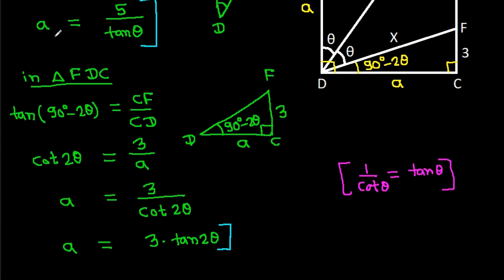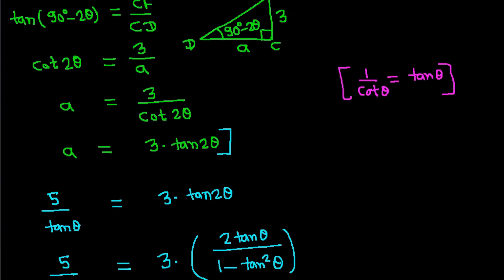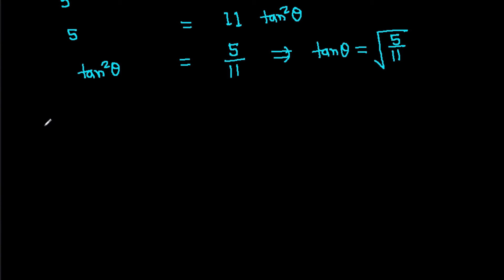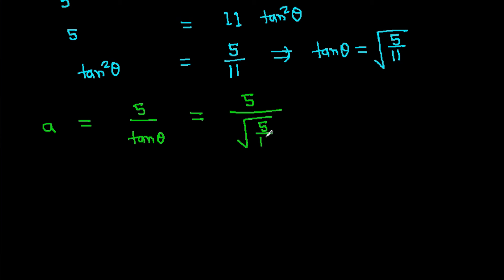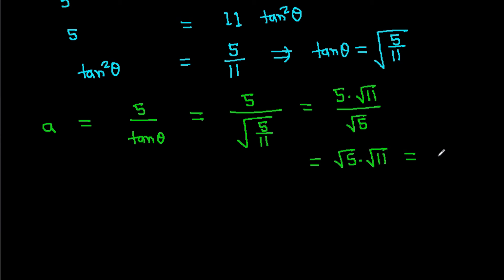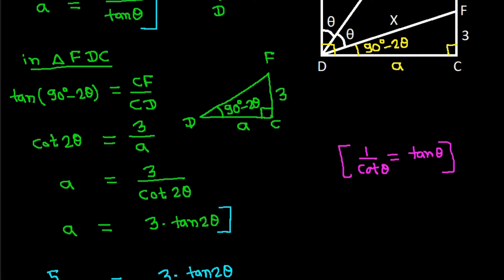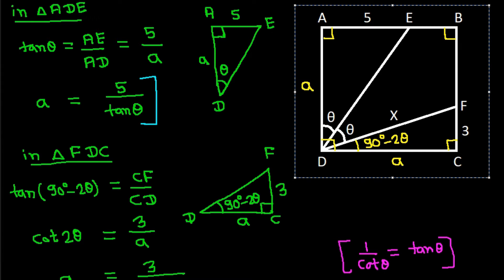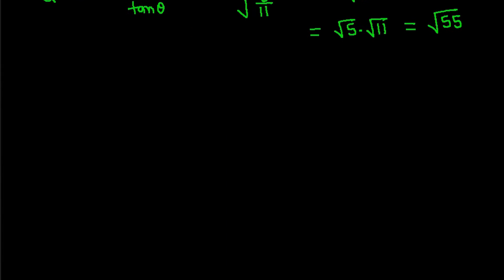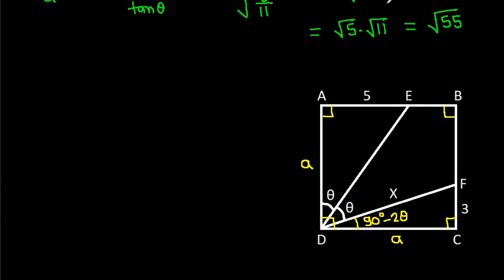We have A equals 5 over tan theta, where tan theta is root of (5 over 11). So A equals 5 times root(11) over root(5), which equals root(5) times root(11), which equals root 55. And we get A equals root 55.